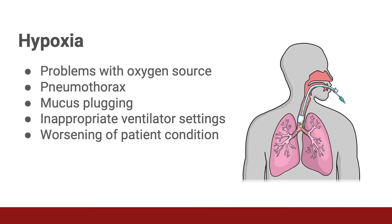Low pulse oxygenation can be a symptom of a variety of problems with the ventilator or the patient. Consider problems with the oxygen source, such as an oxygen tank that has run out or a problem with the central oxygen supply. Low pulse oxygenation can also indicate pneumothorax, mucus plugging, or inappropriate ventilator settings. Low oxygen levels can as well reflect an overall worsening in the patient's condition, such as the development of ventilator-associated pneumonia, pleural effusion, or myocardial ischemia. It's important to assess hypoxia in the context of other vital signs and an assessment of the entire ventilator circuit.